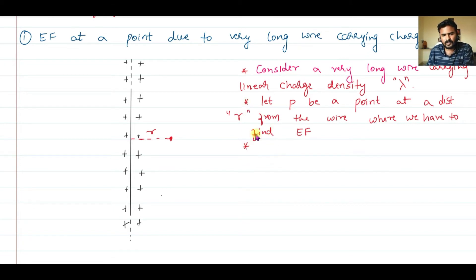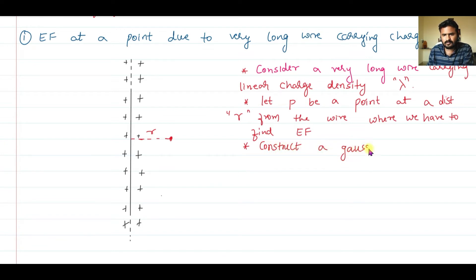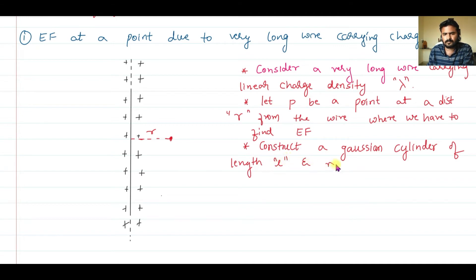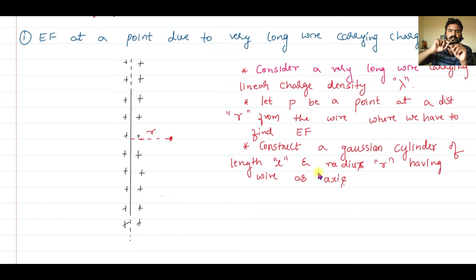Construct a Gaussian cylinder of length L and radius r, having the wire as its axis. The axis is the line passing through the center of the cylinder along its length. Let us construct this Gaussian cylinder now.